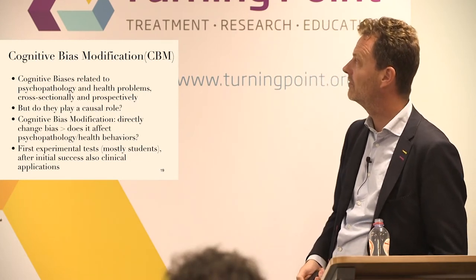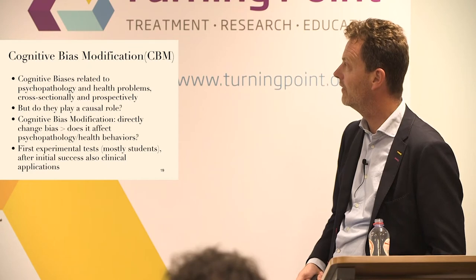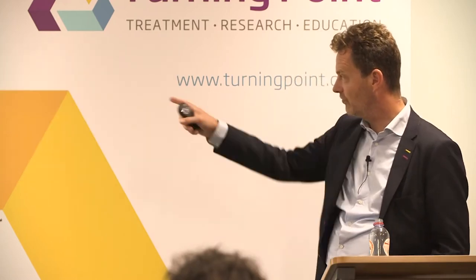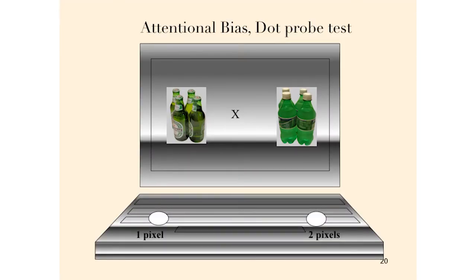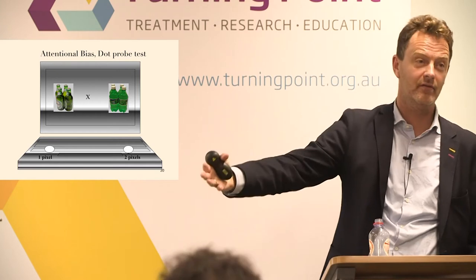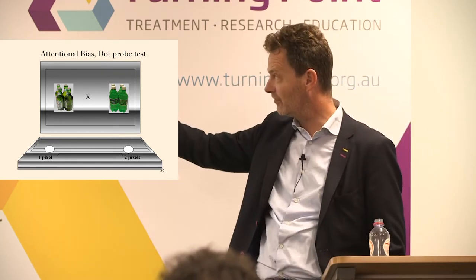We moved this idea to alcohol. In a dot probe task, you have two pictures and the participant indicates where one or two dots appear. Overall, if you drink a lot, you're a little faster when dots replace alcohol versus non-alcohol pictures. It's probably the worst test you can choose for attentional bias in terms of reliability — close to zero, really bad. One focus in the lab is on getting more reliable measures; eye movements do a better job, and there are new varieties of the test that are much better.